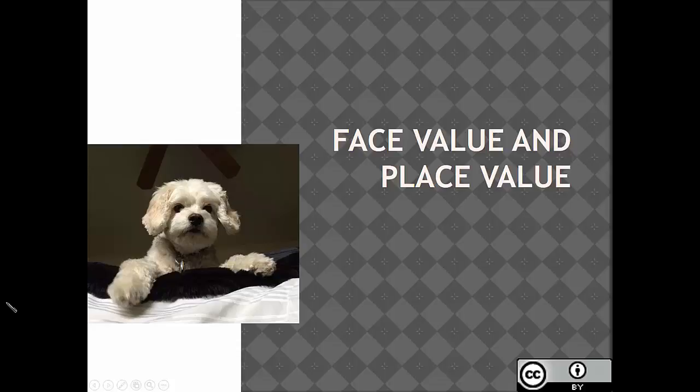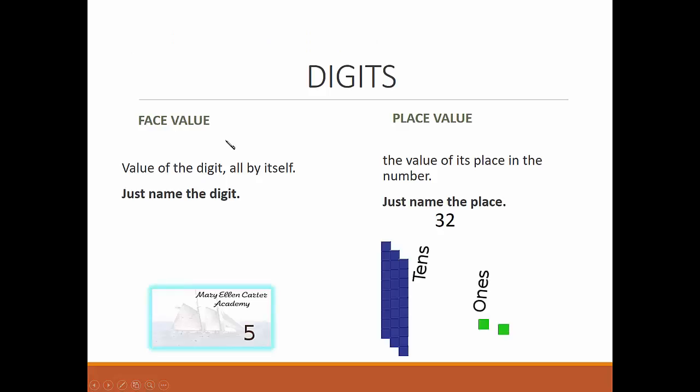Face value and place value. Hey, this place has value! Let's do this. We've got these 10 symbols called digits, and we arrange digits into numbers. How's that work? Here's the big idea: we can think about digits in two ways.